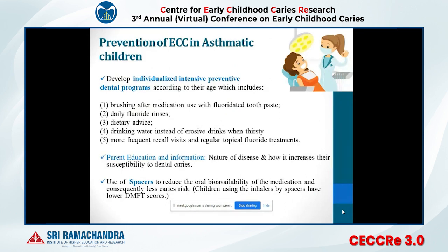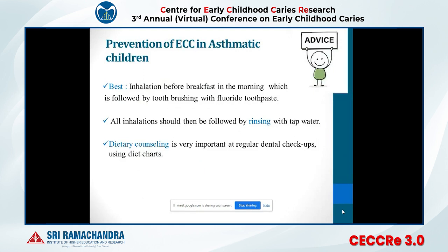To prevent early childhood caries in asthmatic children, an individualized intensive preventive dental program is important, which includes brushing after medication with fluoridated toothpaste, regular use of fluoride rinses, and dietary advice to children and their parents, along with more frequent recall visits to the dentist. The use of spacers to reduce the bioavailability of the medication and therefore reducing caries risk is also suggested. The best practice is to take inhalation before breakfast in the morning followed by tooth brushing with fluoride toothpaste, and all inhalations through the day and night must be followed by rinsing with tap water. Dietary counseling is very important at all dental checkups.